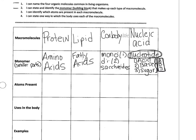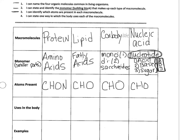The third target is to identify which atoms are present in each molecule. In a protein we have carbon, hydrogen, oxygen, and nitrogen. In a lipid we only have carbon, hydrogen, and oxygen. In a carbohydrate we have the same — carbon, hydrogen, and oxygen. In nucleic acids we have carbon, hydrogen, oxygen, nitrogen, and phosphorus. A good way to remember these is CHON for protein, CHO for lipid, CHO for carbohydrate, and CHOMP for nucleic acids — nucleic acids have the most CHOMP.